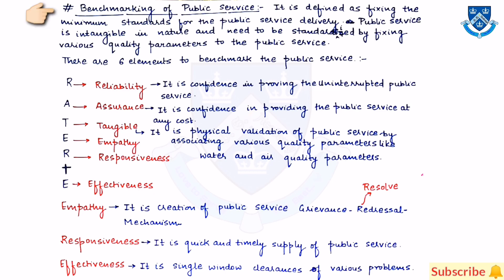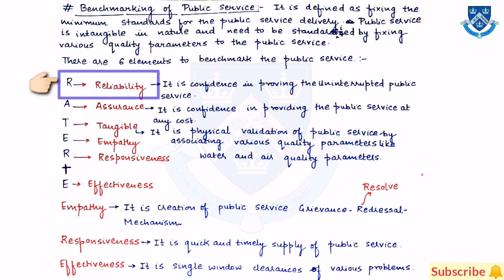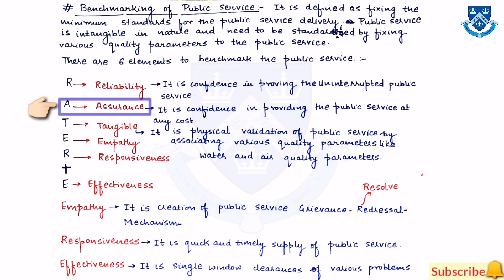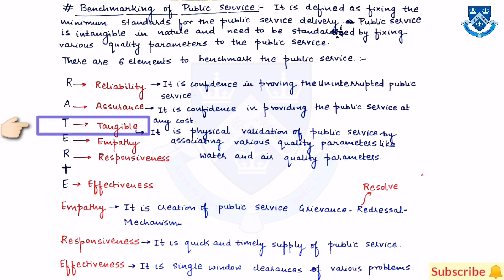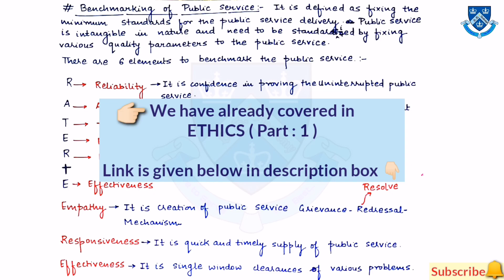There are six elements to benchmark public service using the RATER-E framework. R stands for Reliability — confidence in providing uninterrupted public service. A is for Assurance — confidence in providing public service at any cost. T is for Tangible — physical validation of public service by associating quality parameters like water and air quality. E is for Empathy, R for Responsiveness, and E for Effectiveness. Empathy, responsiveness, and effectiveness were discussed in part one.